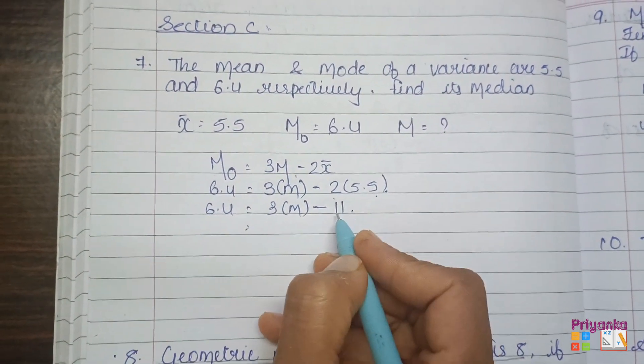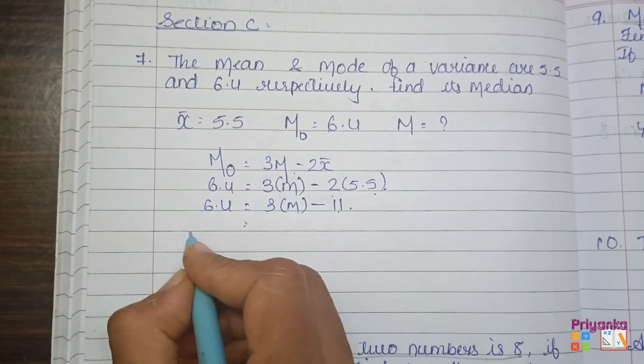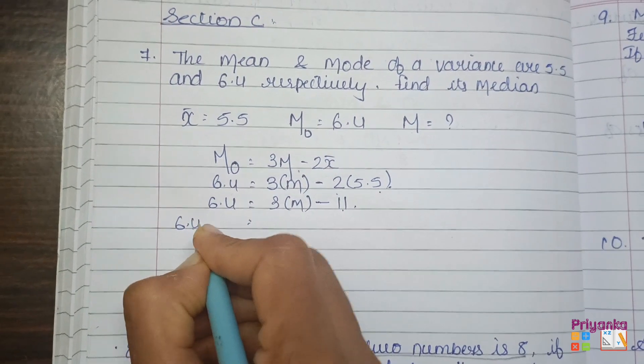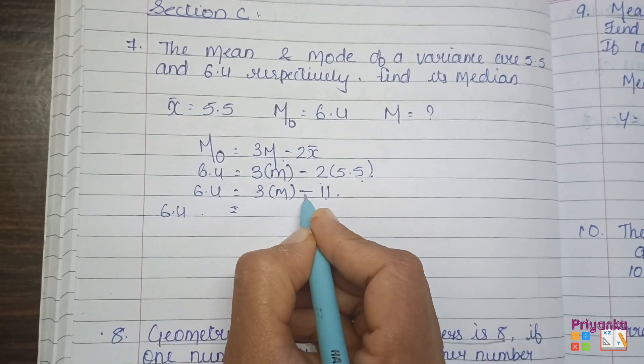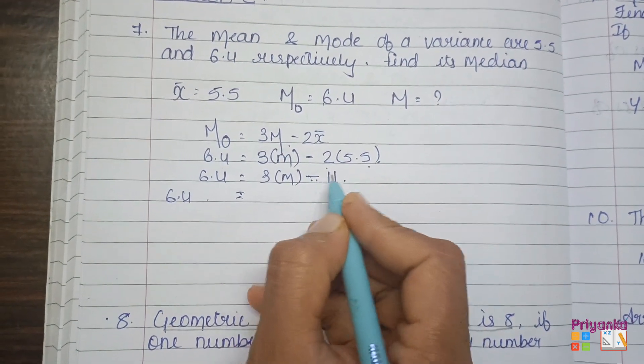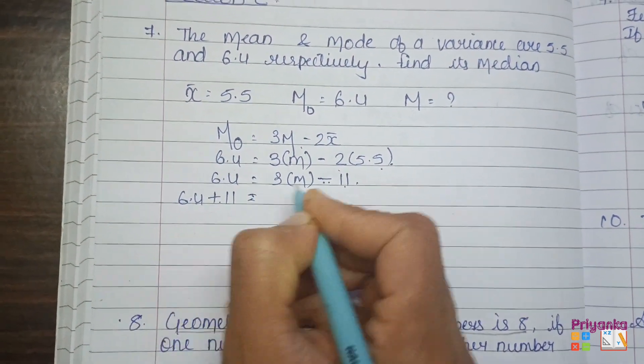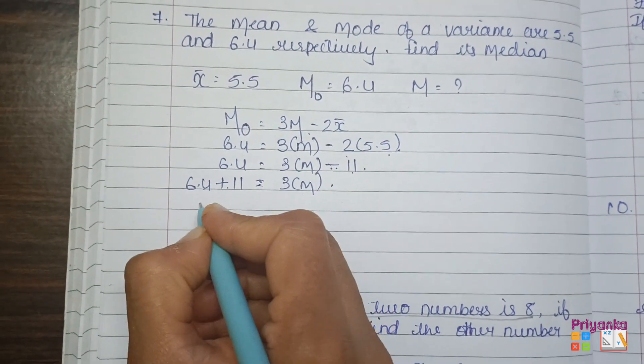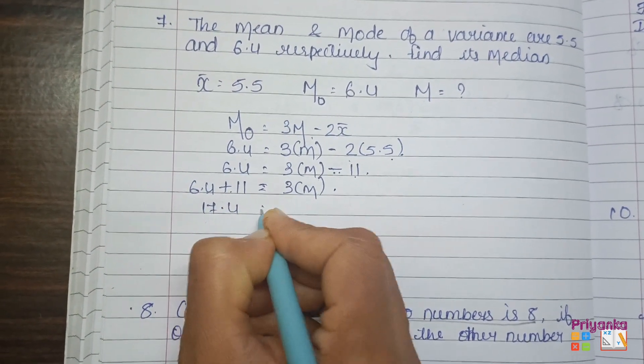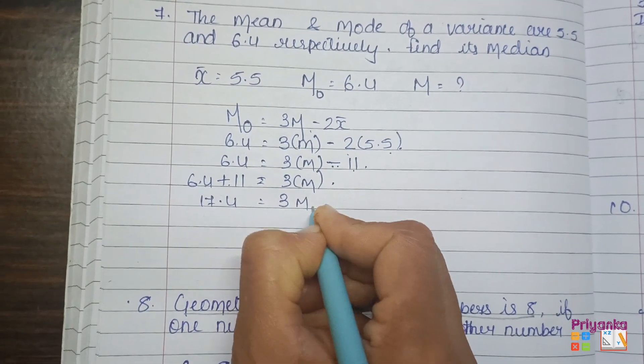Now, we'll take this 11 over here. 6.4 is equal to, if we take it further, then the sign will be changed. Rather than minus, it will change to plus 11.